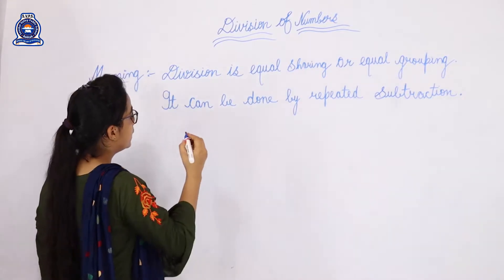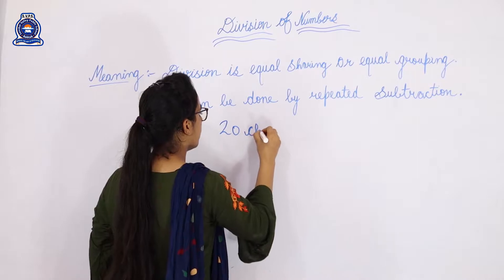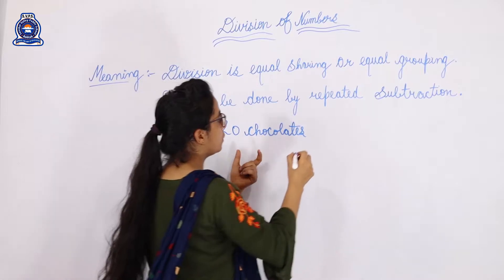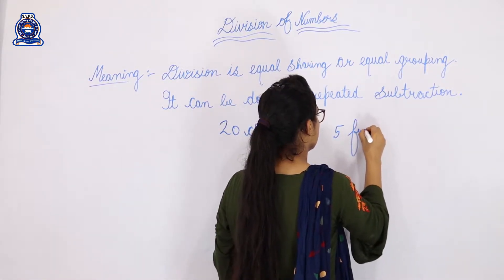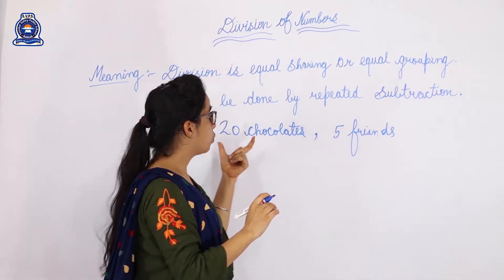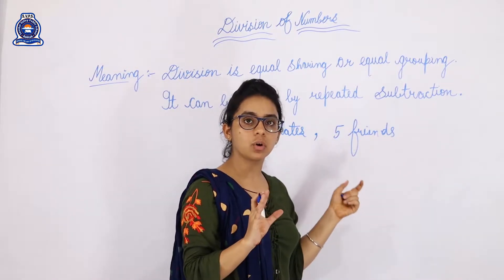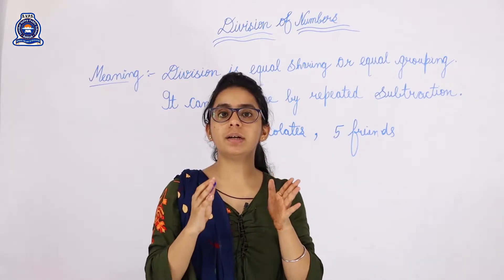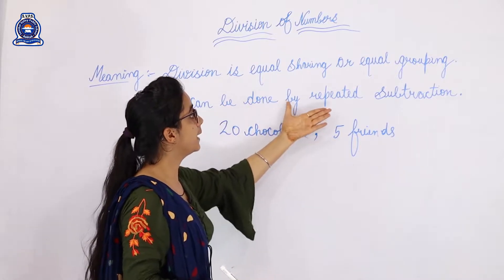For example, I have 20 chocolates and I want to distribute them equally among five friends. We have 20 chocolates and 5 friends, and we need to distribute them equally. We will also see how this can be done by repeated subtraction.